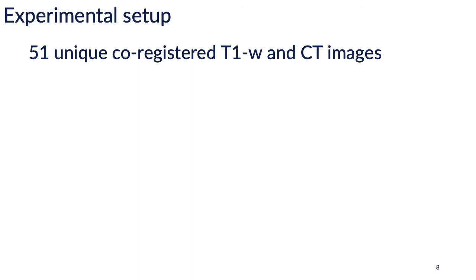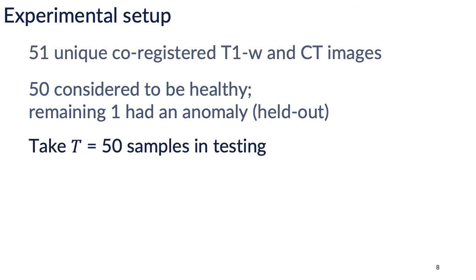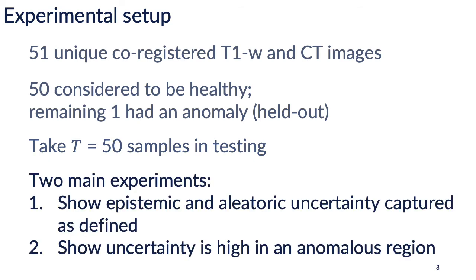We use 51 unique T1-weighted and CT image pairs from 51 patients that have been rigidly co-registered. Fifty of the 51 are healthy, while the remaining one had an anomaly and was held out during training and validation. We sample the network 50 times for each image to create the epistemic uncertainty and other quantities. We do two main experiments: first, showing the two types of uncertainty are captured as defined; and second, validating that uncertainty is high in anomalous regions of test images.